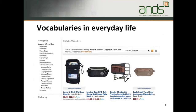Vocabularies are used in information systems. Consumer sites such as Amazon are structured using controlled terms. An item such as a travel wallet is categorised within a hierarchical tree that starts with clothing, shoes and jewellery, then progresses to luggage and travel gear, then down to travel accessories, and finally the item itself, travel wallets. Such categorisations are enabled by controlled vocabularies and are often a complement to a text-based search, or indeed combined with search in a faceted or filtered search.